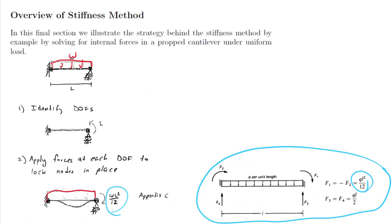So as I apply this load here, if I don't want that node to rotate, I need to apply a moment in that direction.